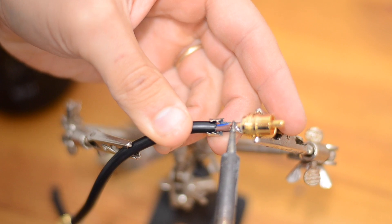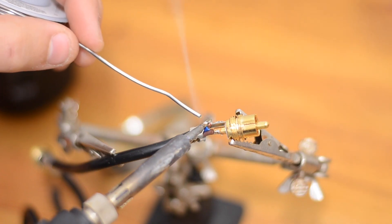Then I'll solder my brown wire to the positive pin, followed by the blue wire being soldered to the outer shell.